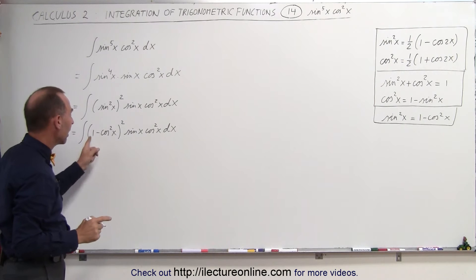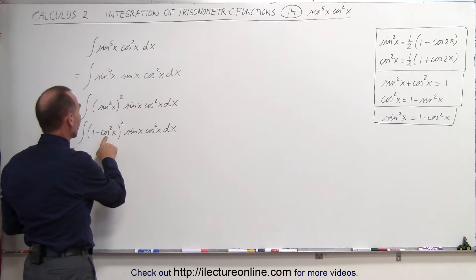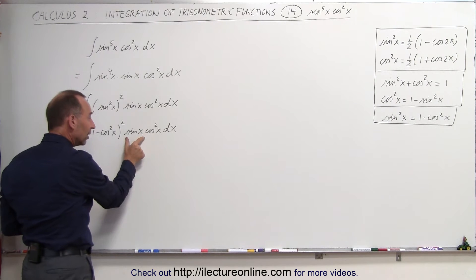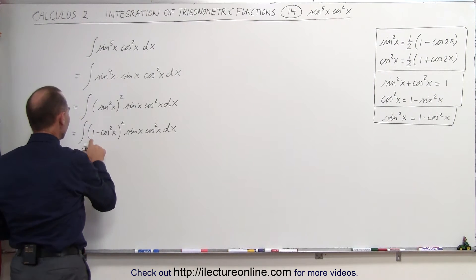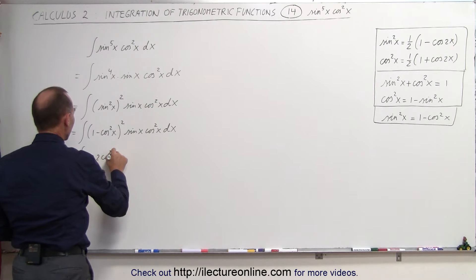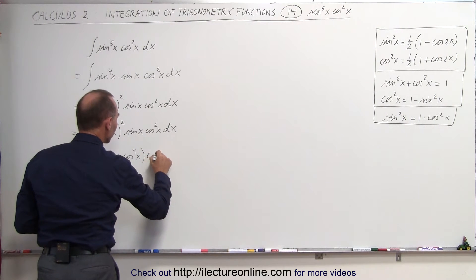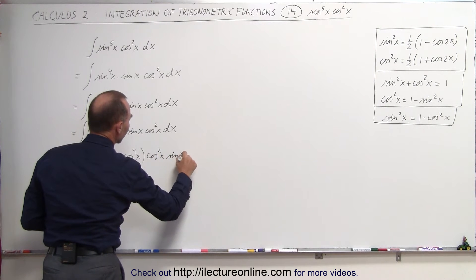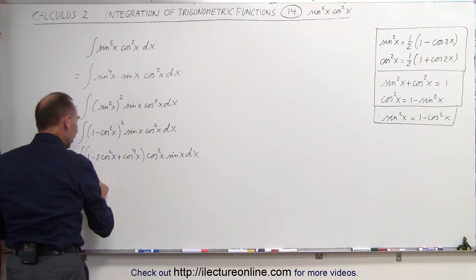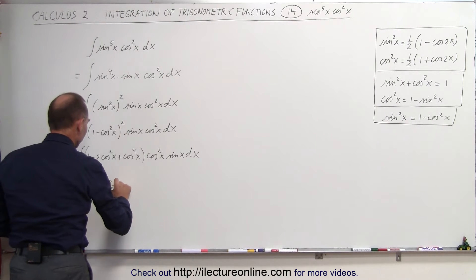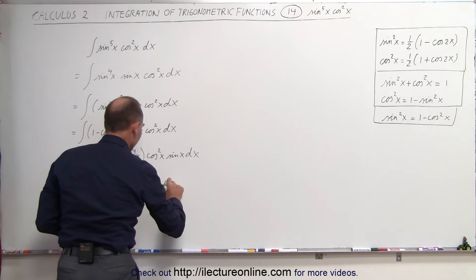The next step is to multiply this out. The whole idea is to find the differential of one of them — we have cosine squared of x squared and a cosine squared here, and sine is the differential of cosine. Working this out, we get 1 minus 2 times cosine squared of x plus cosine to the fourth of x, times cosine squared of x times sine of x dx. Multiplying through gives the integral of cosine squared of x minus 2 times cosine to the fourth of x plus cosine to the sixth of x, all times sine of x dx.